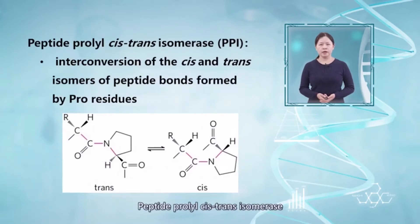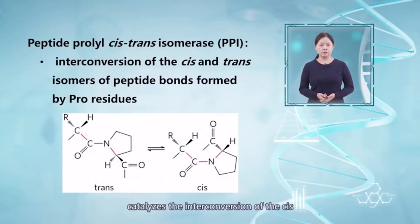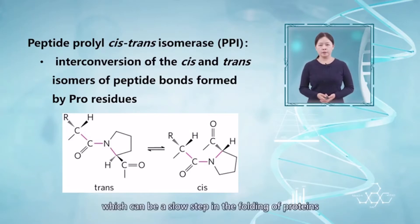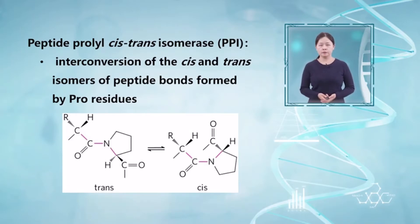Peptidyl-prolyl cis-trans isomerase catalyzes the interconversion of the cis- and trans-isomers of peptide bonds formed by proline residues, which can be a slow step in the folding of proteins.